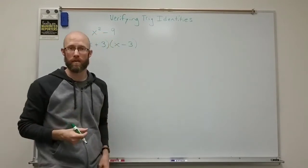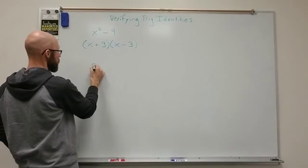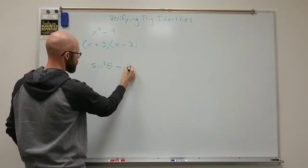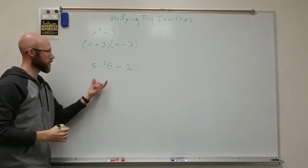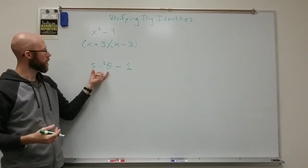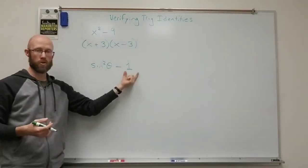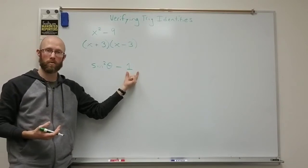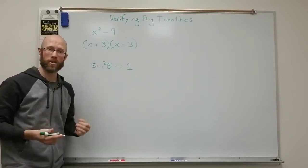Now an equivalent trig version of this could be something like the sine squared theta minus one. Sine squared minus one. Now this is also a difference of two squares. It's the sine of theta squared and one squared. And so it is factorable in a similar way into two conjugates.